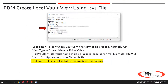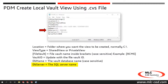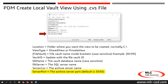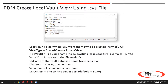DbName is the vault database name and it is case sensitive. DbServer is the SQL server name. ServerLoc is the archive server name. ServerPort is the archive server port — the default port is 3030. Once the changes have been made, simply save the file to a vault-specific name and it's ready to be distributed to clients.